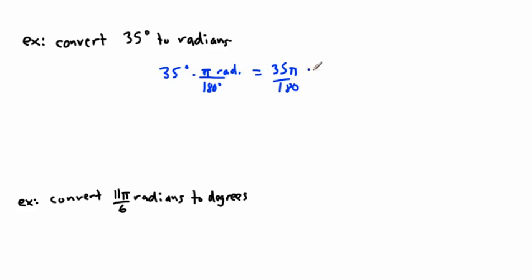My answer is 35π over 180. I can divide 35 by 5, which gives me 7, and if I divide 180 by 5, I get 36. So this is 7π over 36 radians.